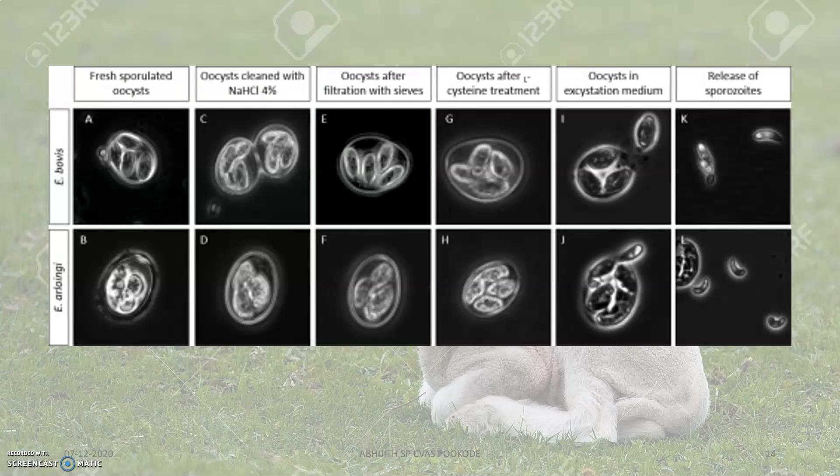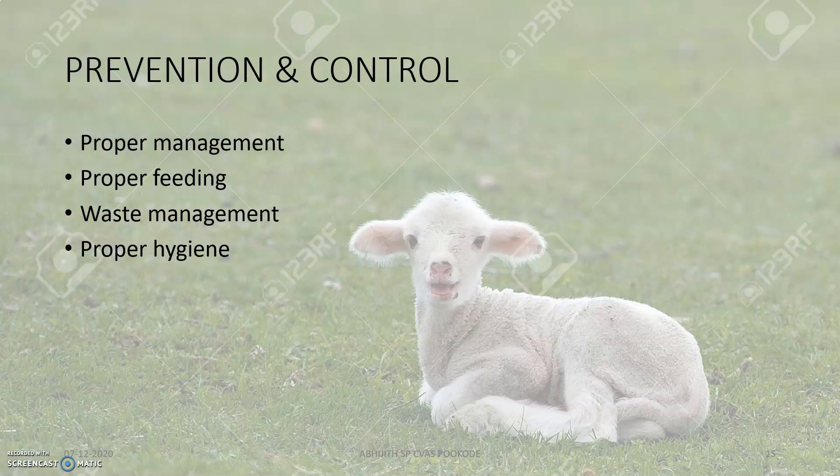These images show the Eimeria species from goats and sheep, including the morphology of oocysts and a comparison between Eimeria bovis and Eimeria arloingi. Prevention and control involves proper management, proper feeding, avoiding mismanagement, maintaining proper hygiene, and vaccination.